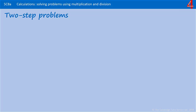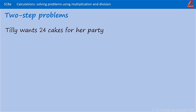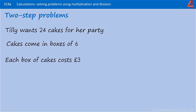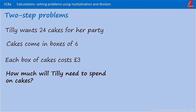We have here some more multiplication and division problems where you have to solve two calculations to get to the answer. Tilly wants 24 cakes for her party. Cakes come in boxes of six. Each box of cakes costs three pounds. How much will Tilly need to spend on cakes?